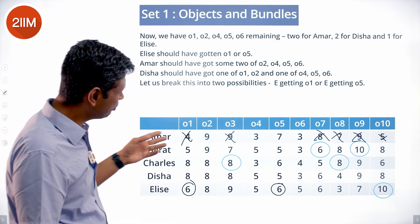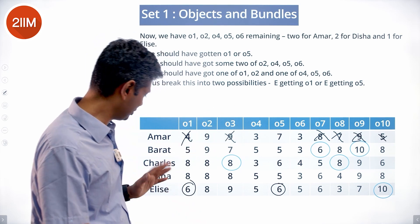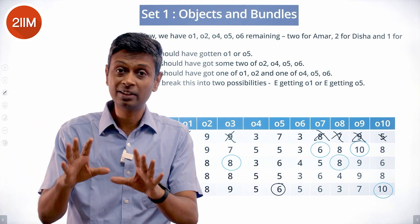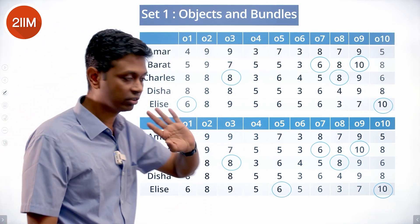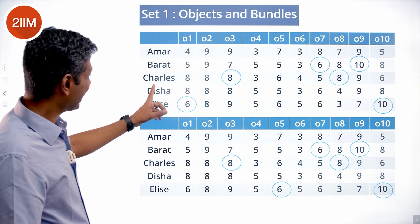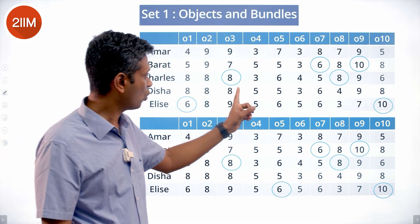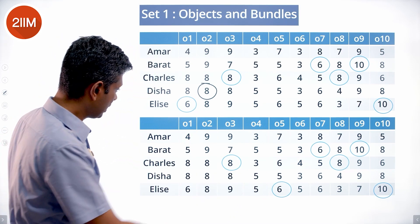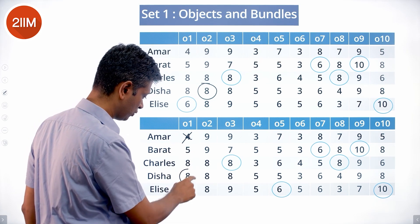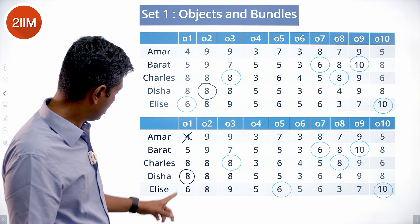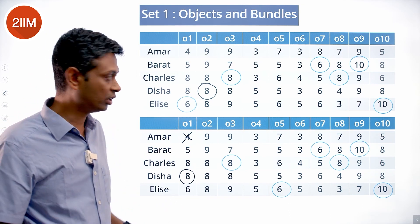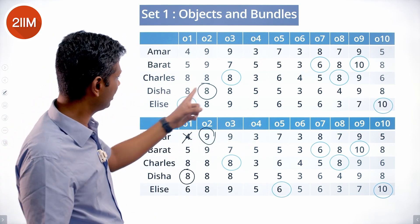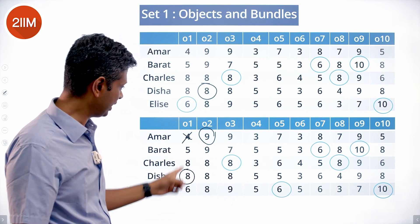There are multiple combinations for Amar — 2 out of those 4 remaining objects. For Elise it's clear: either one 6 or the other. Let's split into two cases by assigning each 6 to Elise and building from there. Disha's total must be odd, so she should have got an 8. If we put 10 and 6 for Elise, the remaining 8 and 9 fill in automatically. Also, Amar could not have got O1, meaning Disha should have got O1 — everyone else is taken. And since Disha cannot have got O2 as well (that would make her total even), Amar should have got O2.